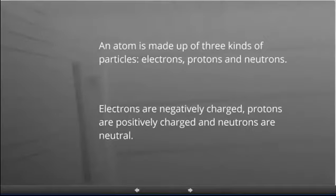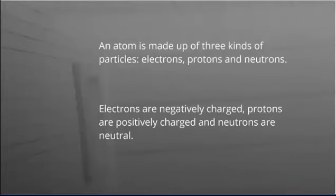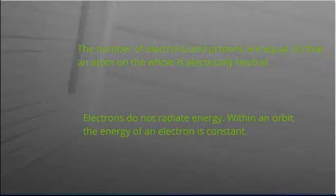He said that an atom is made up of three particles, namely electrons, protons and neutrons. All these have different charges. Electrons are negatively charged, protons are positively charged and neutrons are neutral. He proposed that the atom is electrically neutral with equal number of protons and electrons.